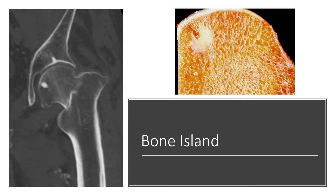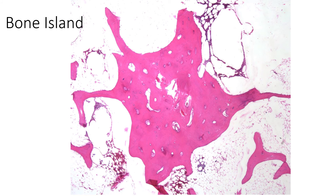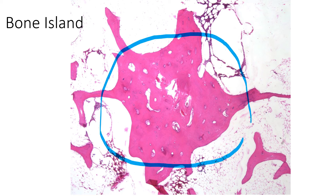Here's a bone island — notice it is within the medullary cavity, with the same density as the overlying cortical bone. Here's actually two bone islands in the same specimen — dense intramedullary lesions. On the gross specimen from the femur you can see it looks like dense cortical bone sitting in the middle of cancellous bone, and it seems to create little tentacles that extend into the adjacent cancellous bone. The histology similarly shows mature cortical-like bone in the middle of cancellous bone, throwing off these characteristic tentacles.